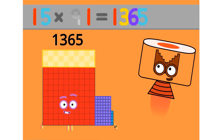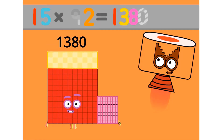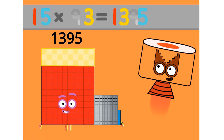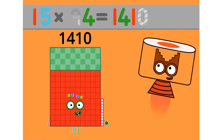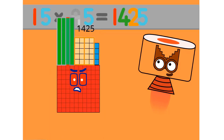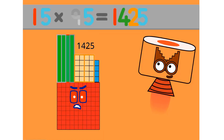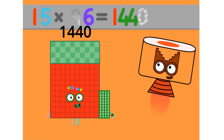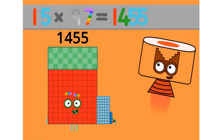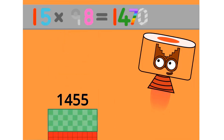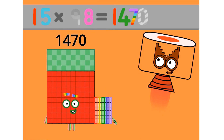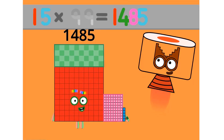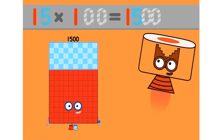15 x 81 equals 1215. 15 x 82 equals 1230. 15 x 83 equals 1245. 15 x 84 equals 1260. 15 x 85 equals 1275. 15 x 86 equals 1290. 15 x 87 equals 1305. 15 x 88 equals 1320. 15 x 89 equals 1335. 15 x 90 equals 1350.